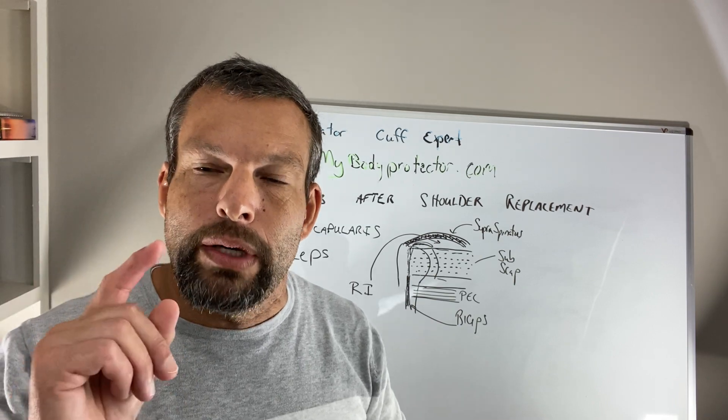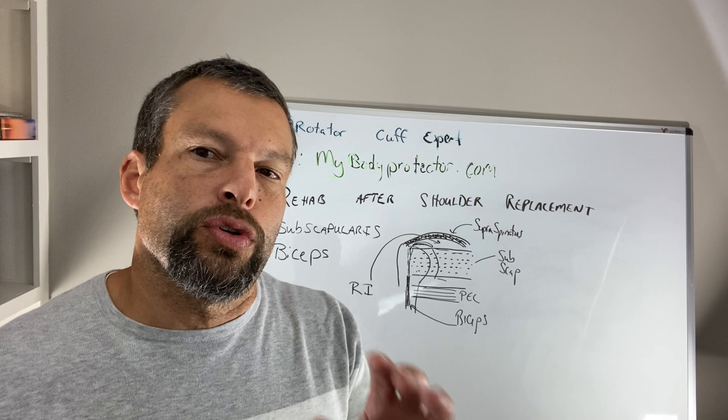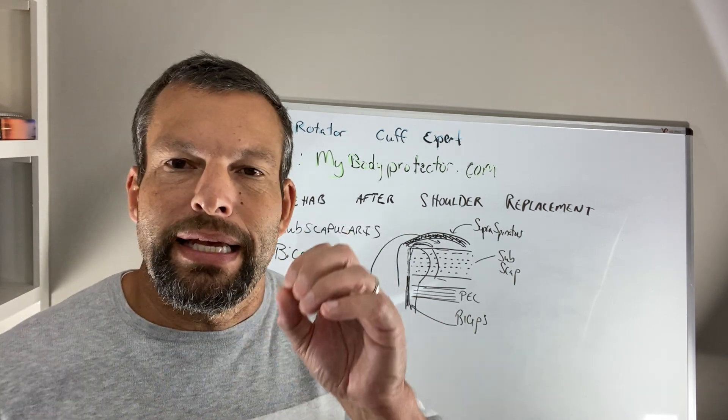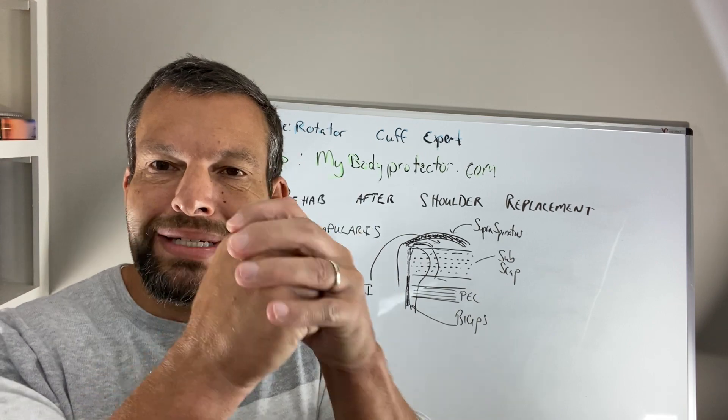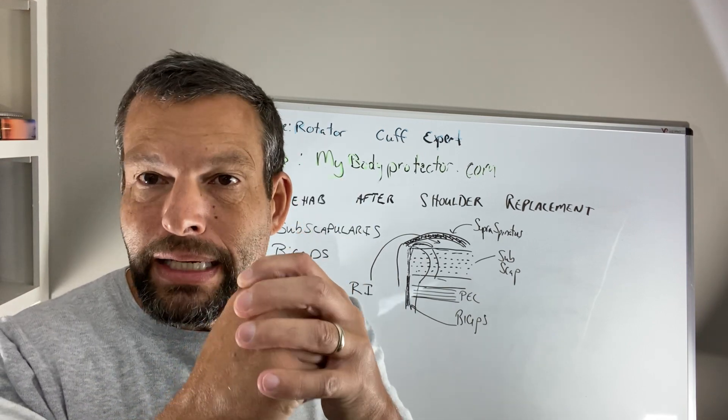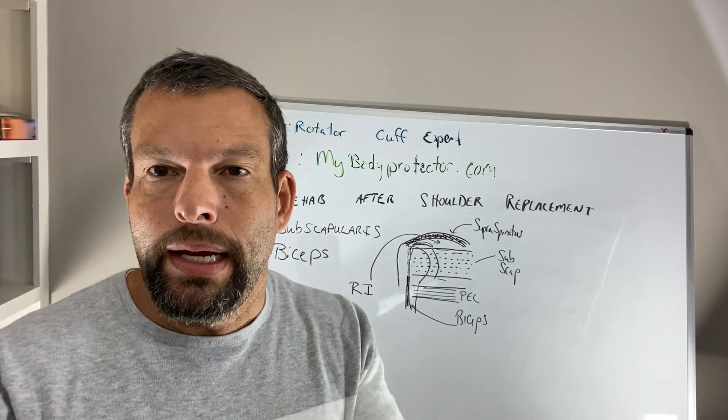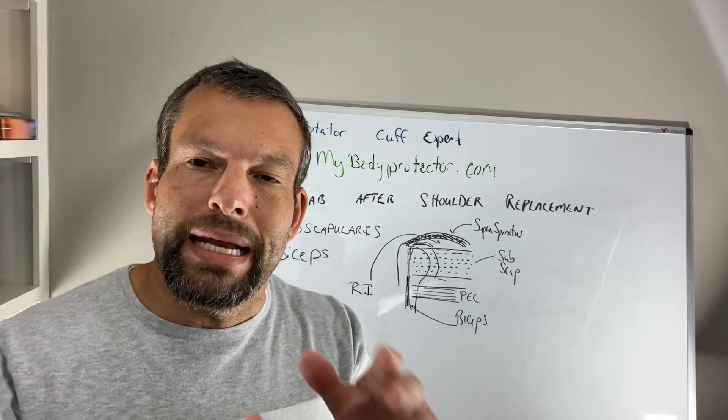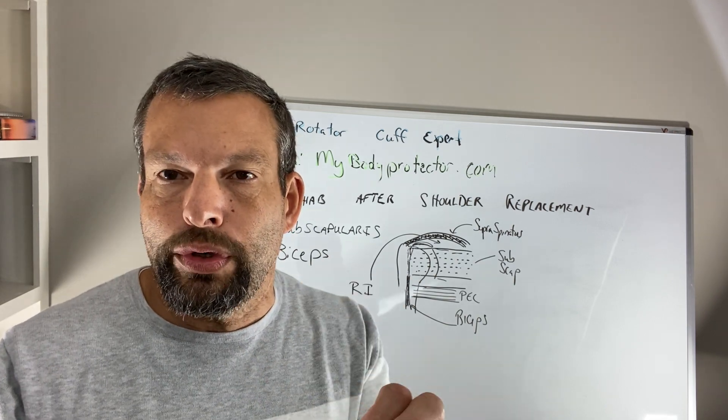Now this is different than when we have a reverse total shoulder. Oftentimes the way the reverse total shoulder is put in is that the subscapularis is not necessary because the socket and the ball are so tightly aligned that it doesn't need any of the rotator cuff to help to hold it in the socket in general. So reverse is different in that there may not be any real specific restrictions after having a reverse total shoulder.